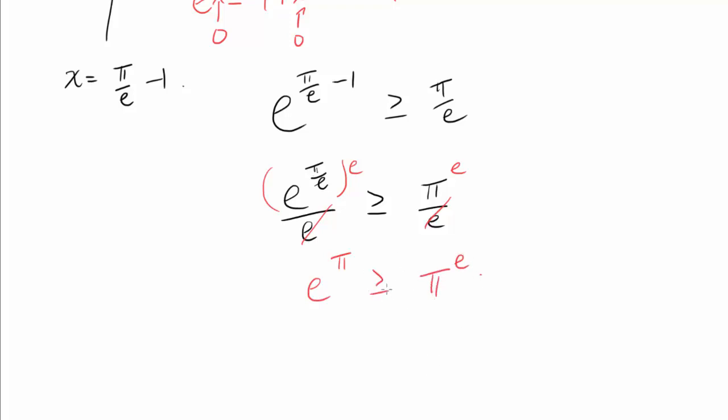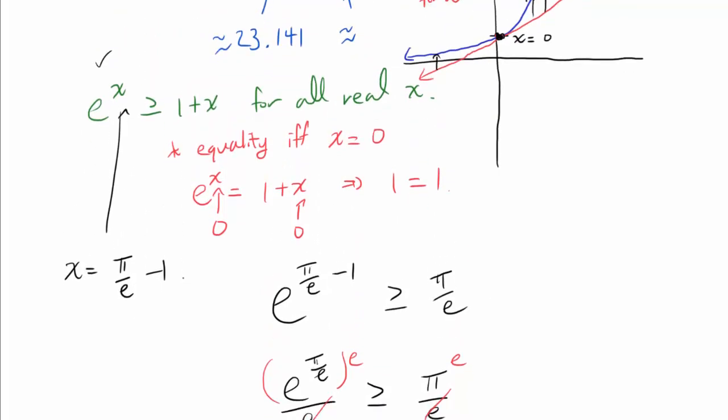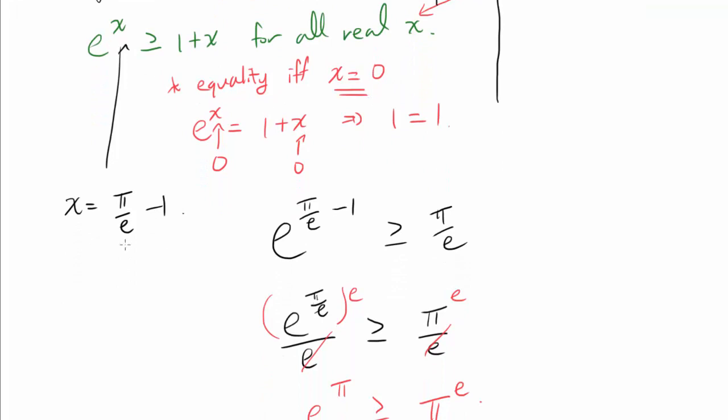Now, is this greater than or equal to or greater than? Well, we only have the equality if x is 0, and in our case, we have x being pi over e minus 1. Well, if x is 0, then we get pi over e is 1 or pi is equal to e. But that's a contradiction because pi and e have different values. So we see that we don't have x equals to 0. So our inequality is strict.